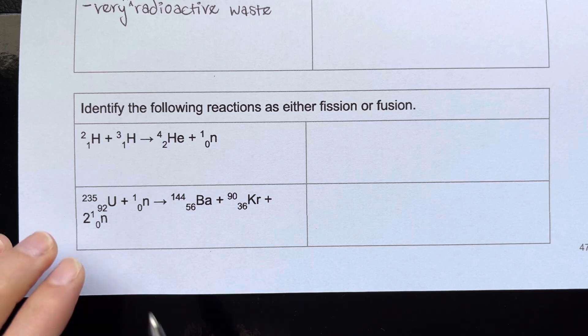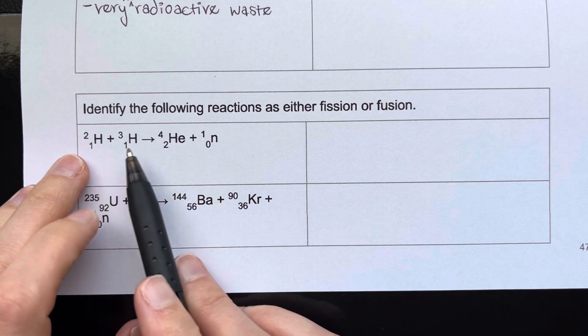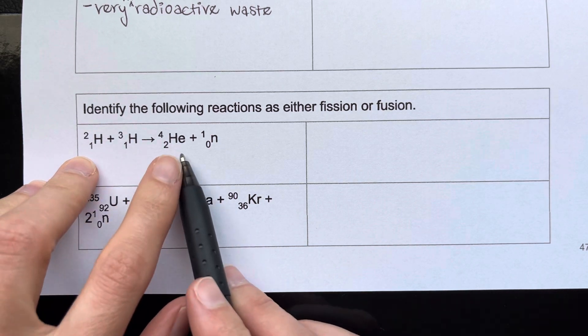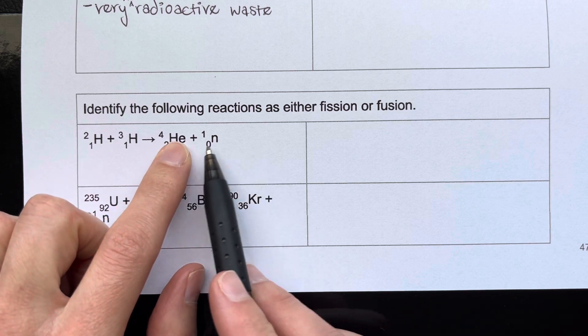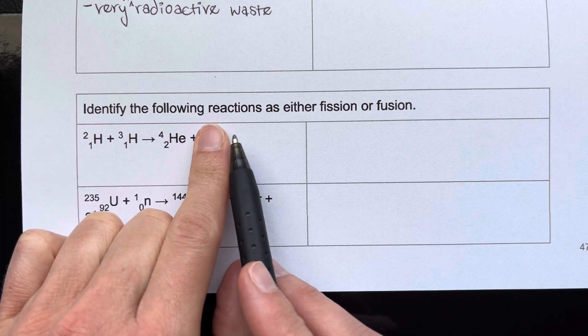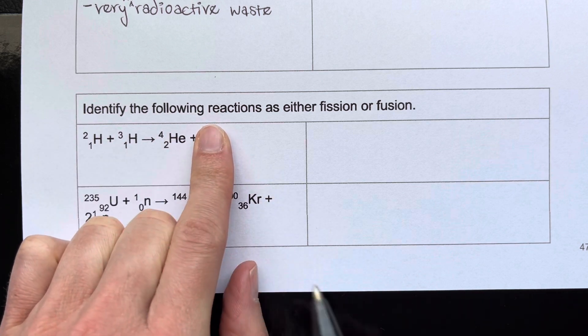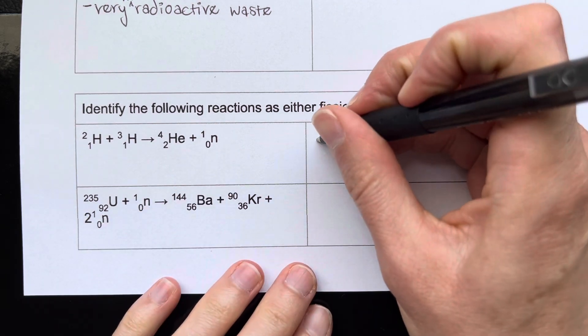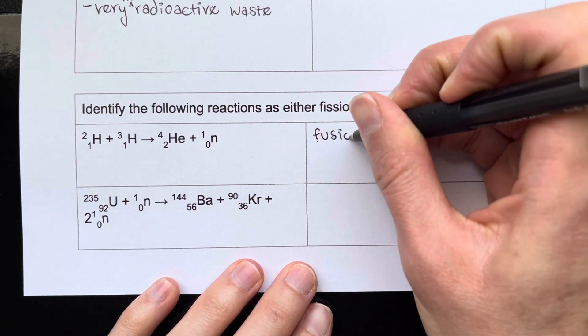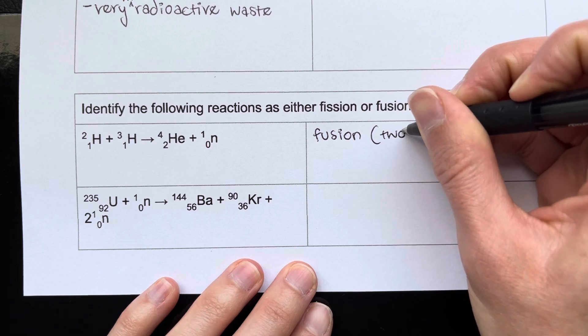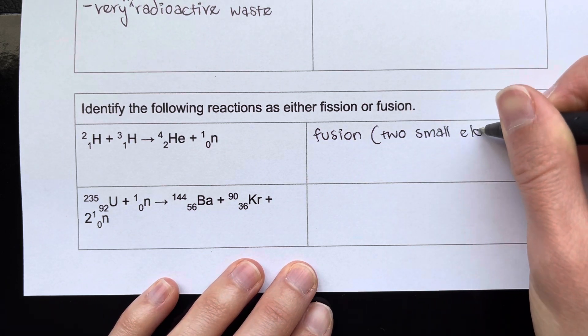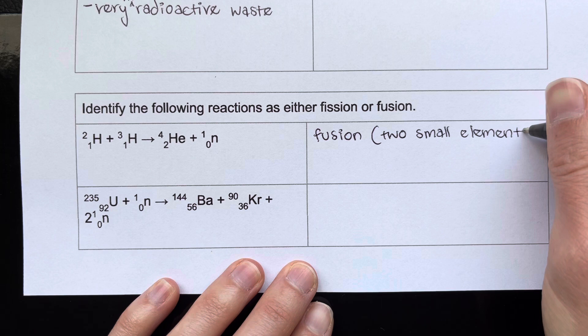If we look at this first one, this one has small elements. We've got two hydrogens combining and forming helium. They're also forming a neutron, but that's not an element. So basically, we've got two things combining into one. That is fusion. And the reason that is fusion is we have two small elements combining into a bigger element.